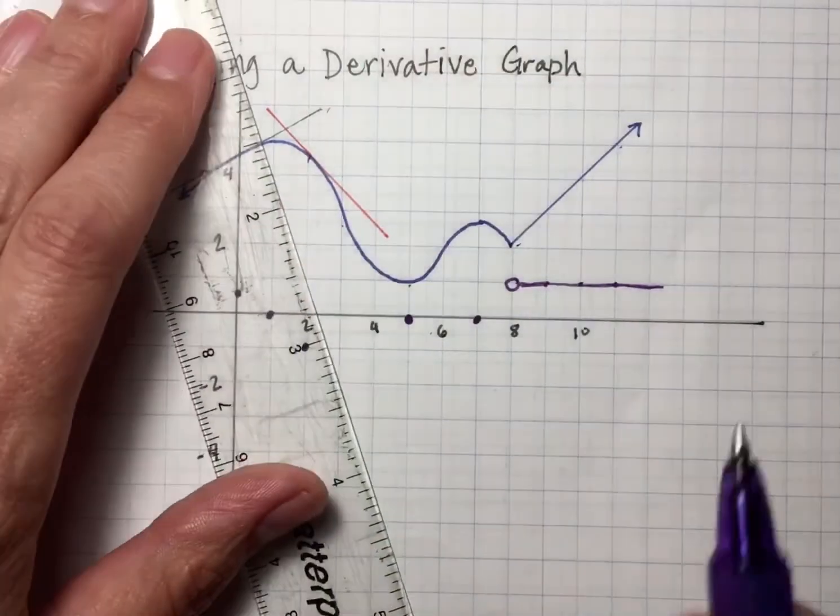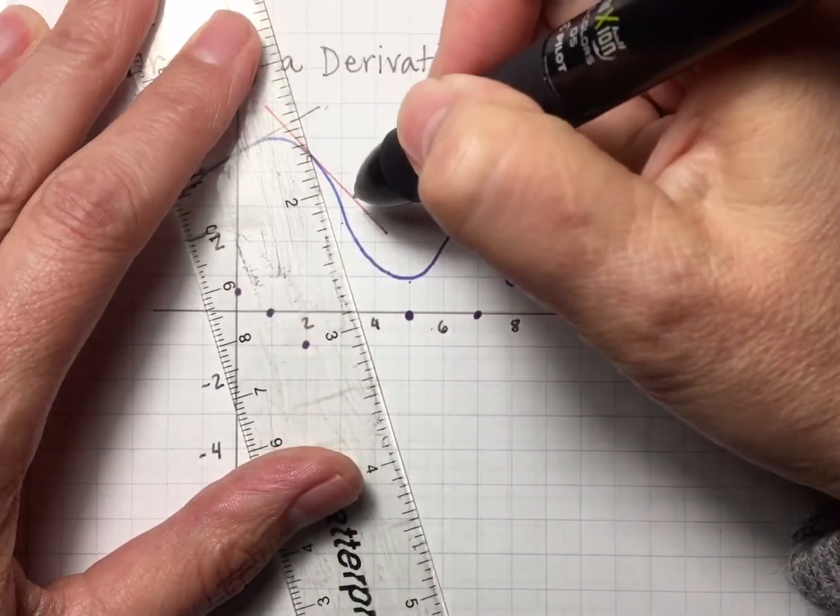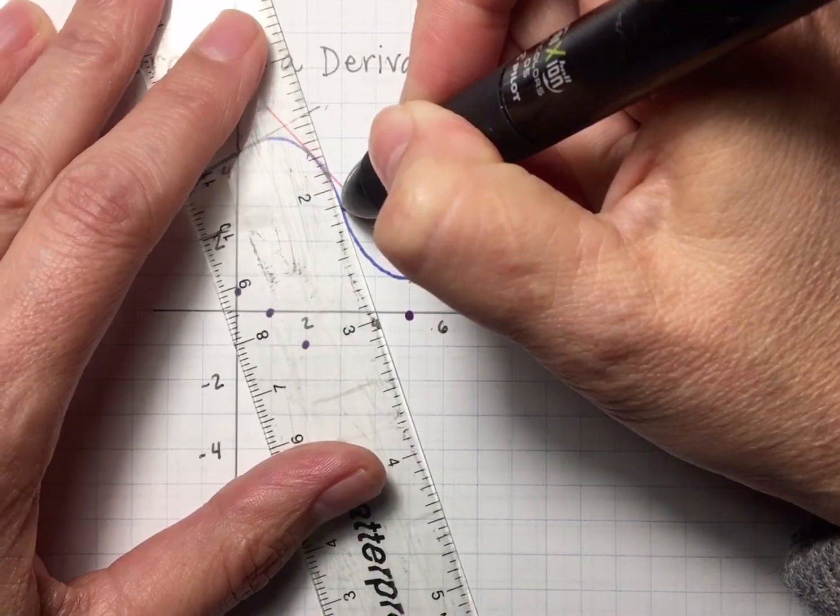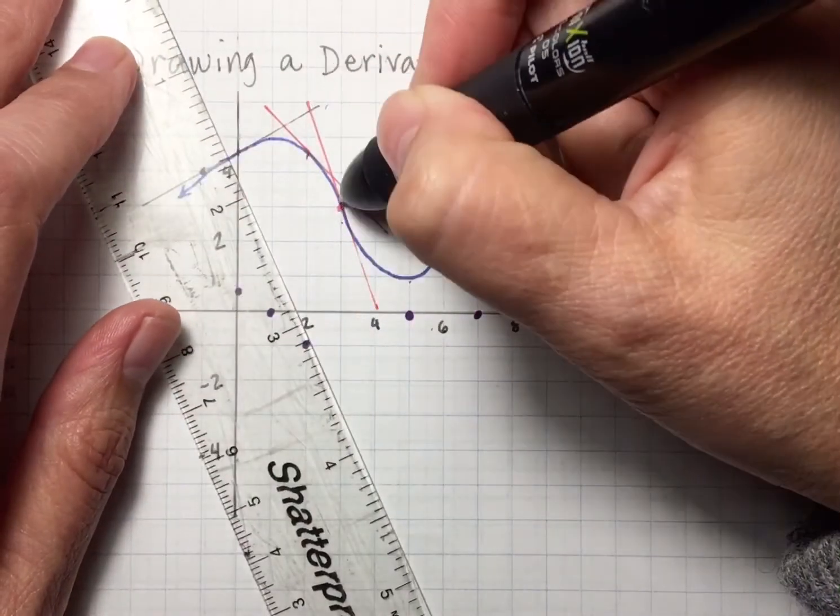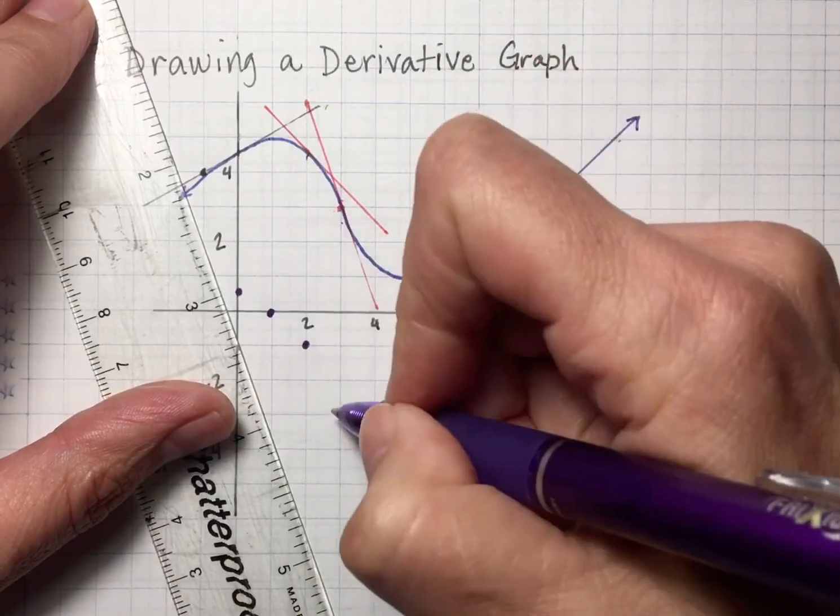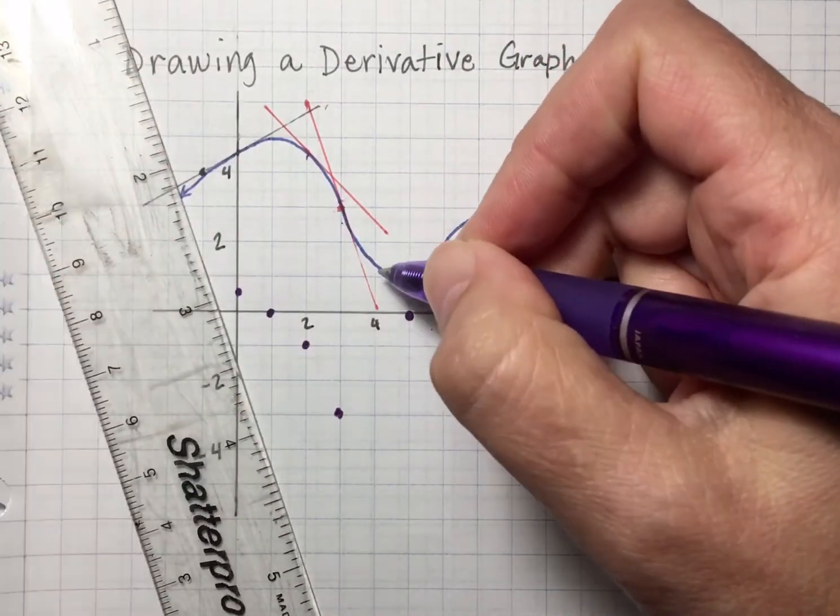When x is 3, this is getting quite steep. Trying to do two colors is kind of annoying for pen juggling, but if I draw a tangent line there, my slope is somewhere around like, looking from here to there, down 3 over 1, slope of negative 3. So it's quite steep there.